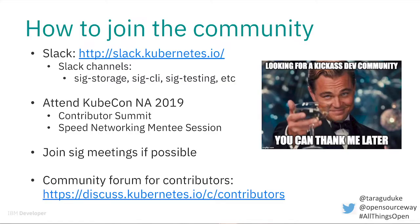If you get stuck, you can reach out to the issue creators directly or join the relevant Slack channels. SIG stands for Special Interest Group — depending on what areas the issue touches on, you can join those groups and ask for help. I also attended KubeCon North America last year in Seattle, and one of the best things was the speed networking mentee session, where I met over ten contributors in one hour. They gave me really helpful advice on how to grow in the open source community.